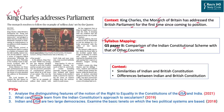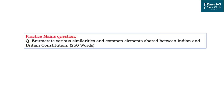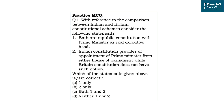Whenever we read about the constitution of other countries, remember there are 5-6 important countries you should always compare with the Indian constitution: the US, UK, France, Japan, China, and Russia. Today's discussion will cover the similarities India shares with the British constitution and the differences between both. After the entire discussion, you will be able to answer a mains question as well as a prelims practice question.